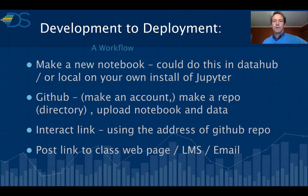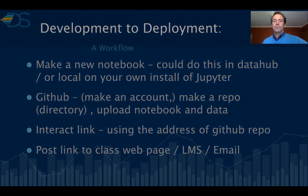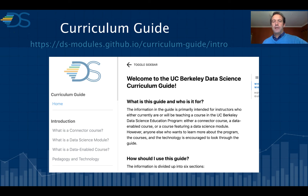Let's think about how this would work as an instructor. First, make a new notebook — work with the team if you're at UC Berkeley, or find one of our notebooks and hack it for your class. You could do this on the JupyterHub server or on your own local machine with a local install of Jupyter. Make a public repo on GitHub, upload the notebook and the data set you want students to work on, then make an interact link using the address of the public GitHub repo. Post that link to your class web page, put it on the LMS, or send it to students via email. We have all this and more described in an open-source book for our faculty, with useful resources for all sorts of instructors.